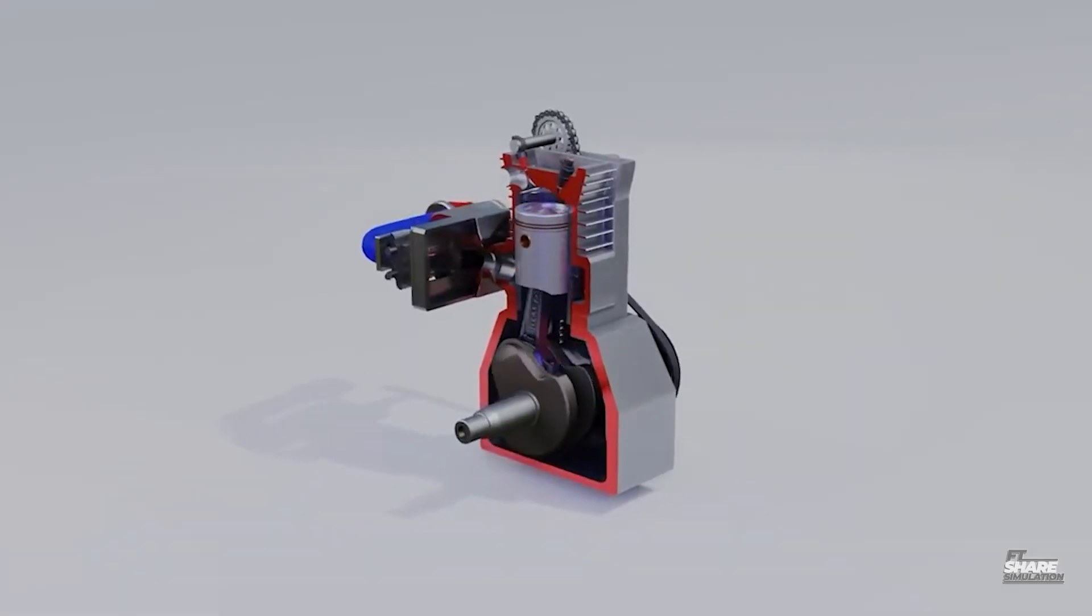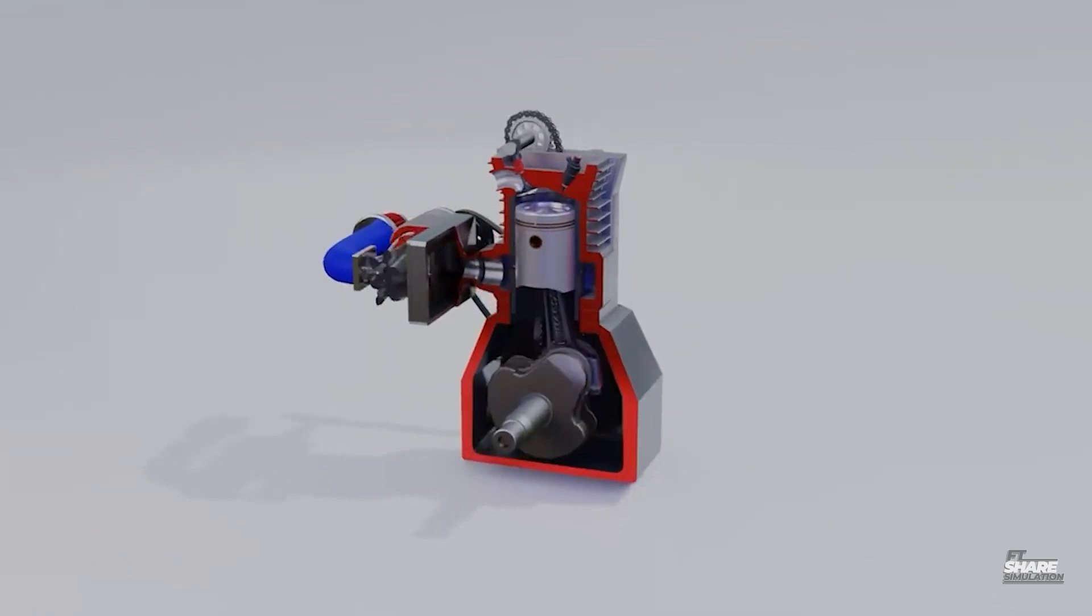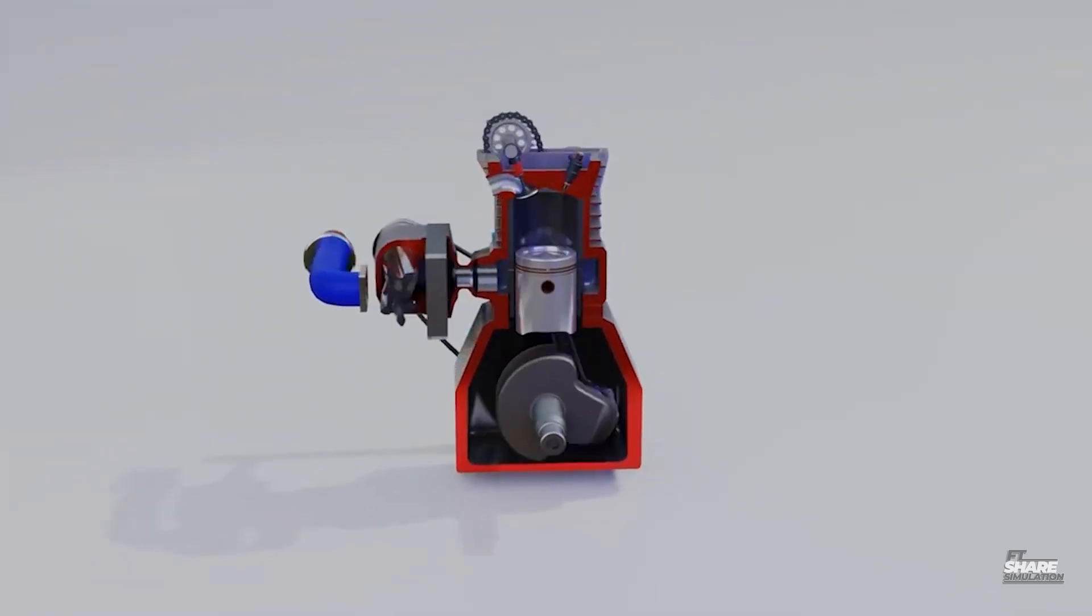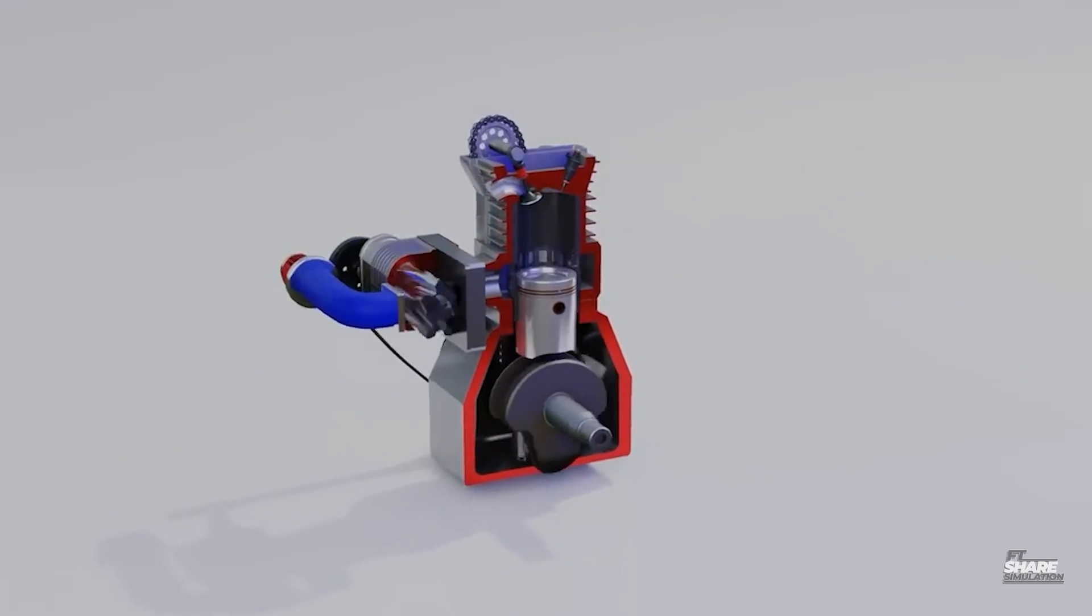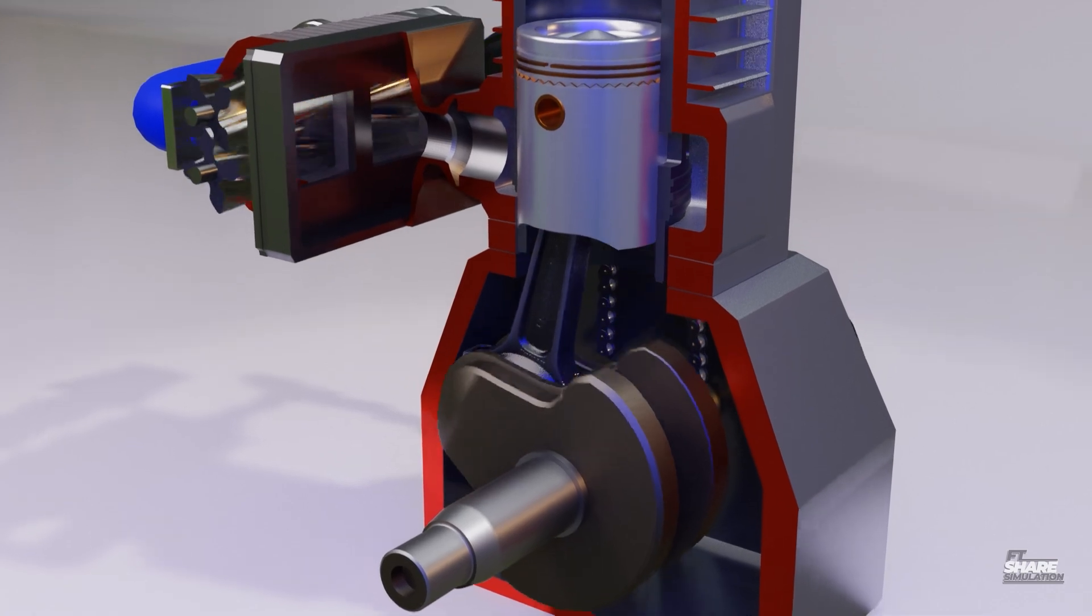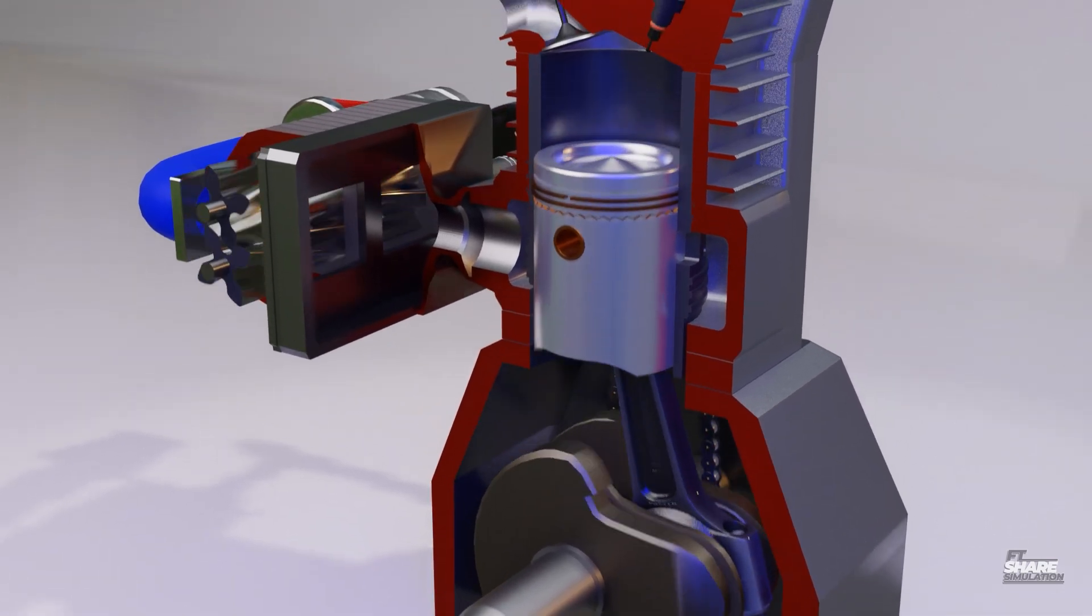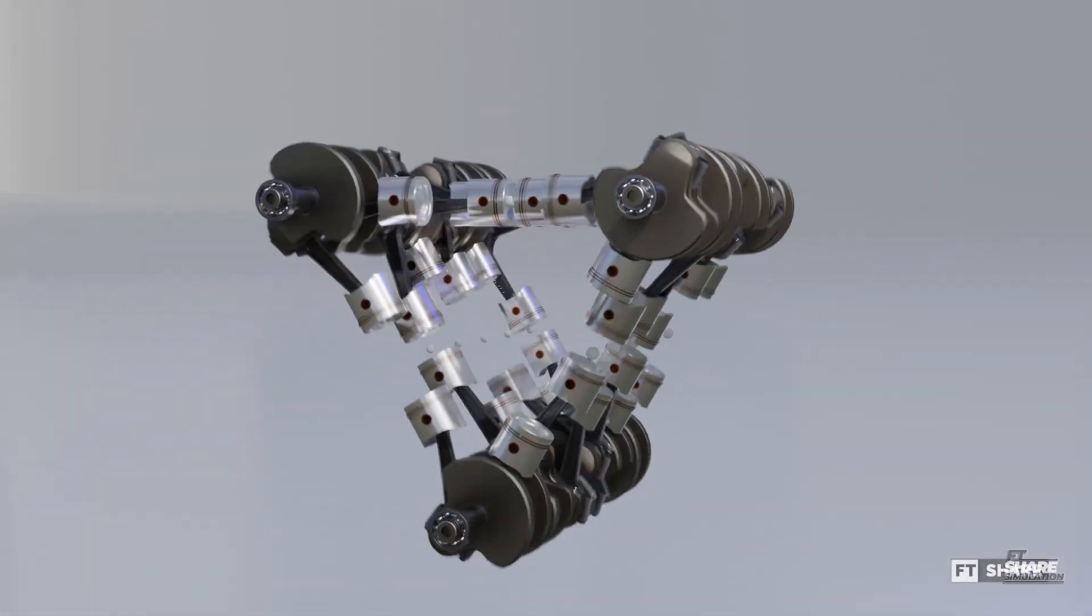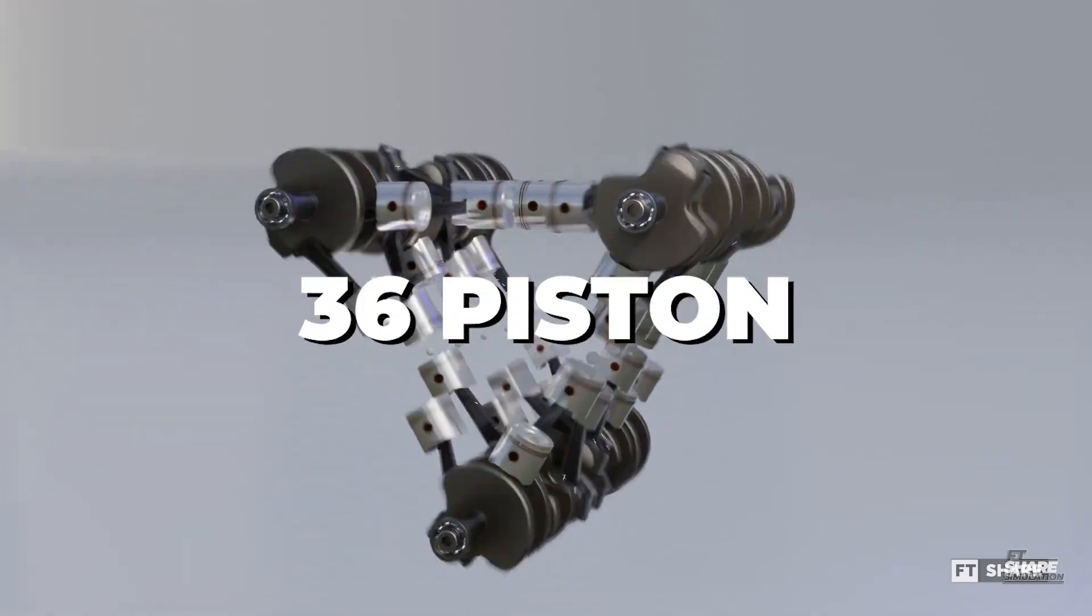Furthermore, as we know, this engine is still undergoing development. For example, the opposed piston engine we discussed in the previous video, along with other advancements, make it possible for the two-stroke diesel engine to be mass-produced and sold to the public. Just like the opposed piston engine, we still have to wait.